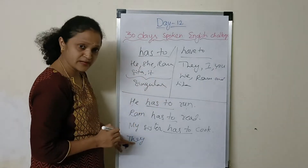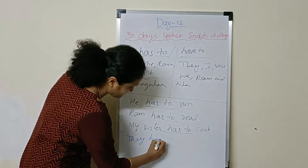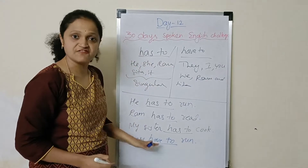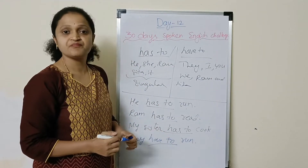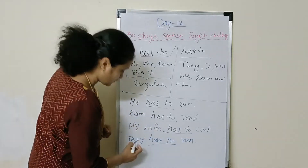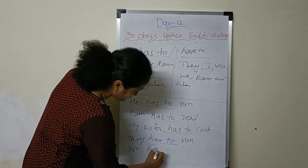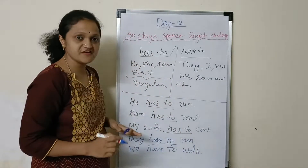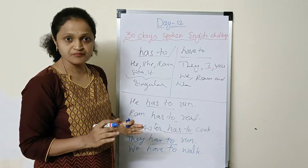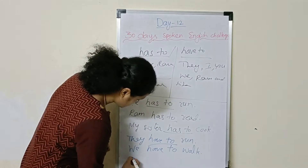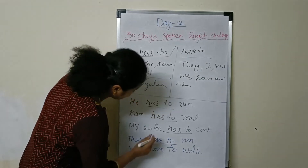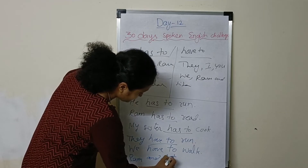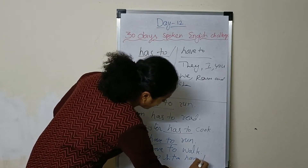Now let us take plural examples. They have to run. 'They' is plural, so we use 'have to.' They have to run. Next: We have to walk. 'We' also takes 'have to.' And: Ram and Sita have to read — together they are plural, so 'have to' is used.